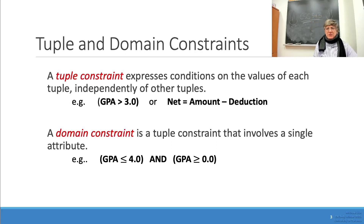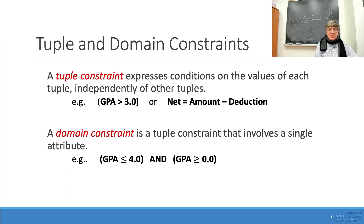A tuple constraint expresses conditions on the values of each tuple independently of other tuples. For example, GPA greater than 3, or net equals amount minus deduction — assuming the tuple has an attribute called GPA, or three attributes called amount, deduction, and net.